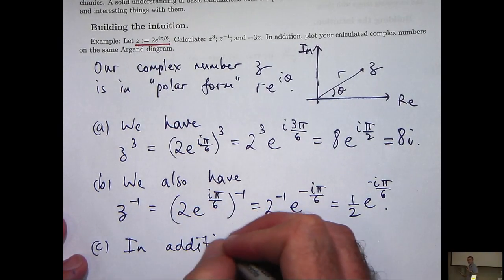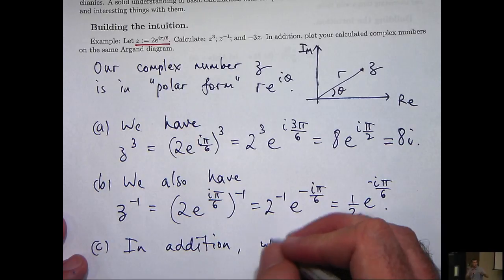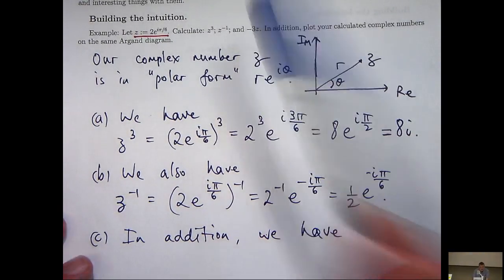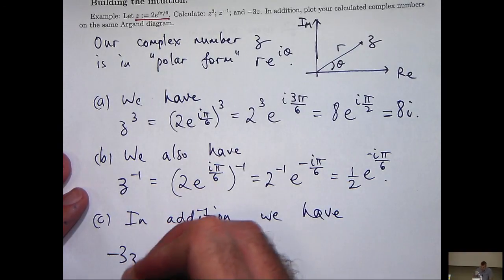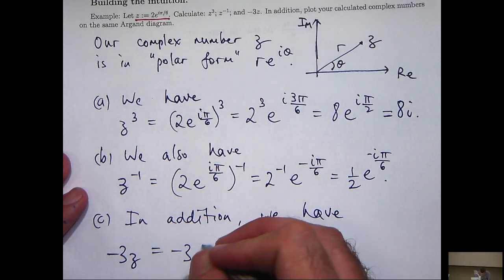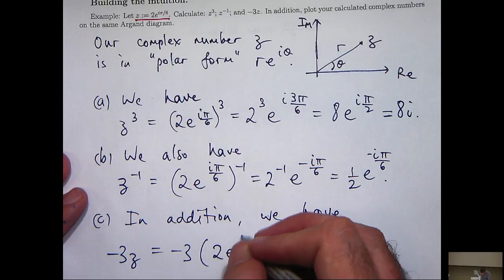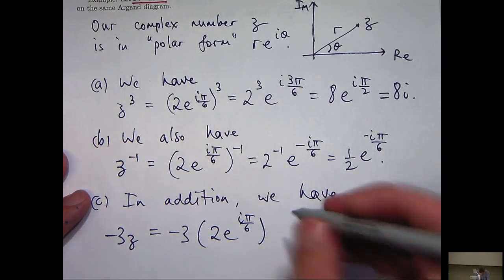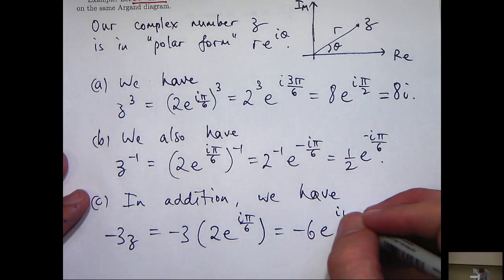So lastly, we would like to calculate -3z. So let's use our polar form again. Again, nothing fancy here, just regular multiplication.